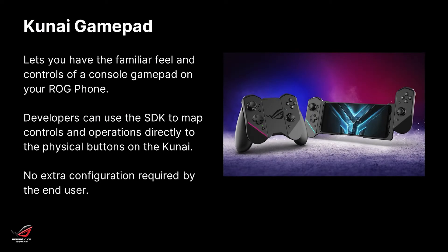Moving on to the Kunai gamepad. It lets you have that familiar, robust feeling of a console gamepad when playing on your ROG phone. As you can see in the picture, we allow you to have it as a standalone gamepad in both wired and Bluetooth mode, but you can also use it directly on the phone in bumper mode. The SDK allows you to map all the physical buttons on the Kunai gamepad to your in-game controls — all the analog sticks, the buttons, the triggers, and so on.